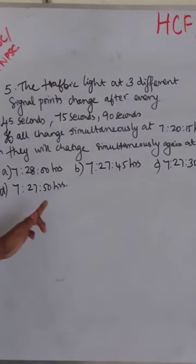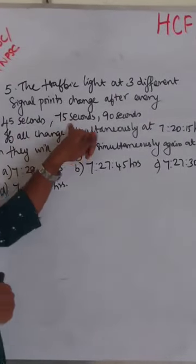The traffic light at three different signal points change after every 45 seconds, 75 seconds, 90 seconds.